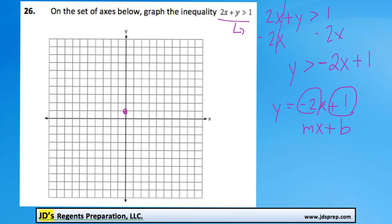We know that the slope is negative 2, and that means we're going to have a rise of negative 2 and a run of 1. So that means we're going to be going down 2 and to the right 1.